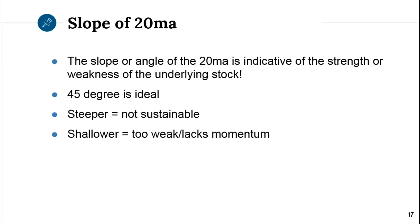We talked about the direction of the 20MA, how it's used in transitions A and C, and the basic guidelines about how moving averages need to be consistent across multiple time frames — the color and type. Now we're going to talk about the slope of the 20MA.